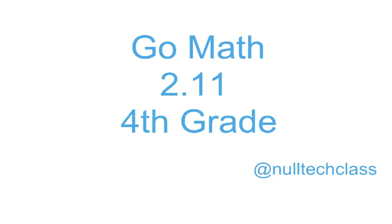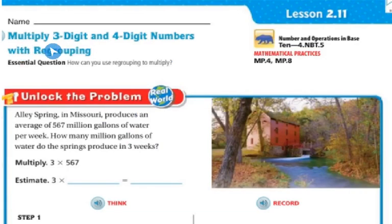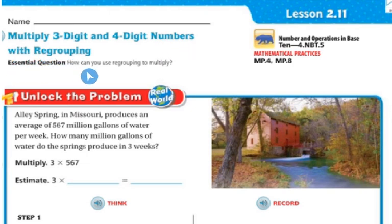Good morning. Today's lesson is 2.11. Today we're going to multiply three-digit and four-digit numbers with regrouping. Our essential question: how can you use regrouping to multiply?